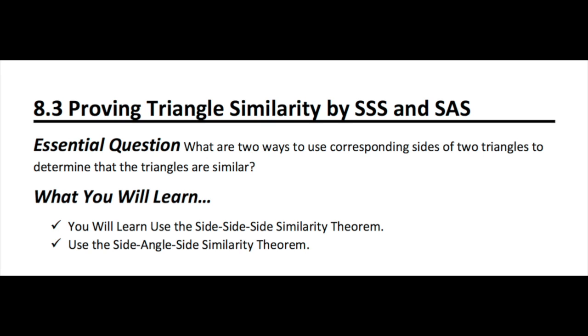This is 8.3, Proving Triangle Similarity by Side-Side-Side and Side-Angle-Side. The essential question is: what are two ways to use corresponding sides of two triangles to determine that the triangles are similar? What you're expected to learn is how to use the Side-Side-Side Similarity Theorem and the Side-Angle-Side Similarity Theorem to solve different problems.